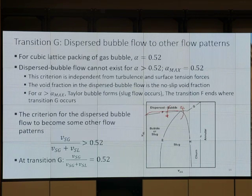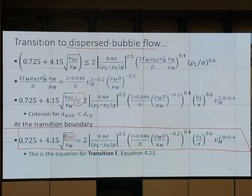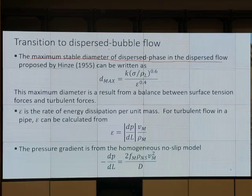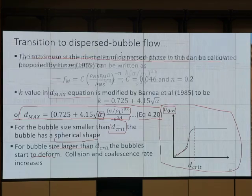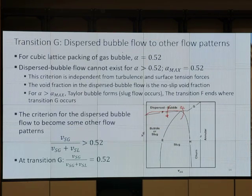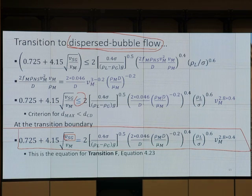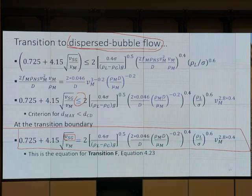Next is dispersed bubble flow to other flow patterns — Transition G. This one is dispersed bubble flow to bubble flow. Transition F: dispersed bubble and bubble. What do you have in the book? Transition F — transition to dispersed bubble flow. F and G — they talk about both at the same time. Notice F or G — okay, F and G. Now let's take a look at Transition G.